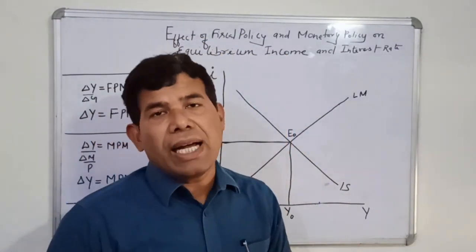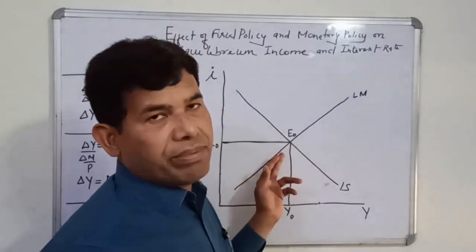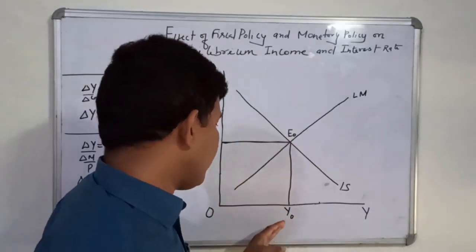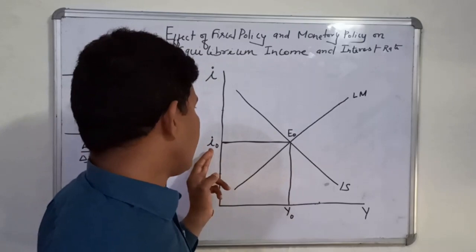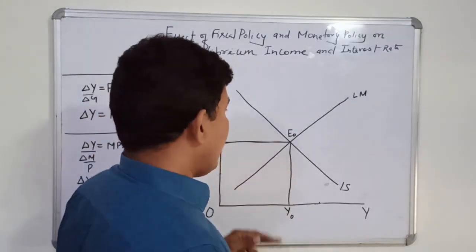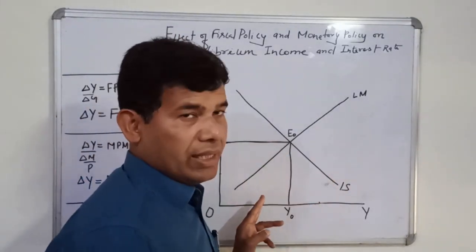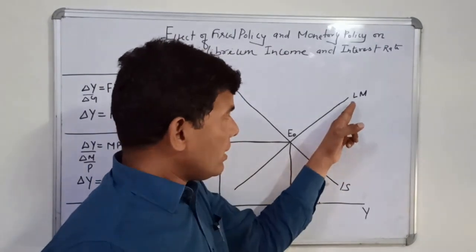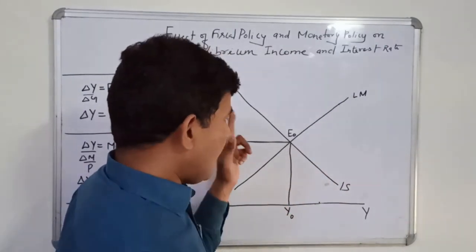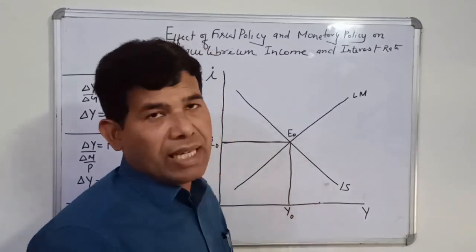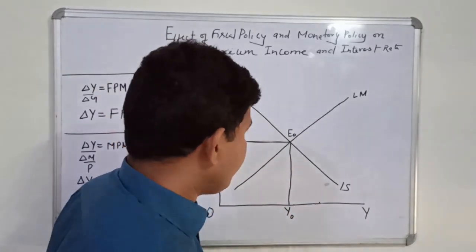As per the IS-LM model graphically, we have derived the equilibrium level of income Y0 and equilibrium level of interest rate I0, given the IS line and LM line. Remember, this LM line has been derived with respect to one level of money supply and this IS line has been derived with respect to one level of government expenditure.